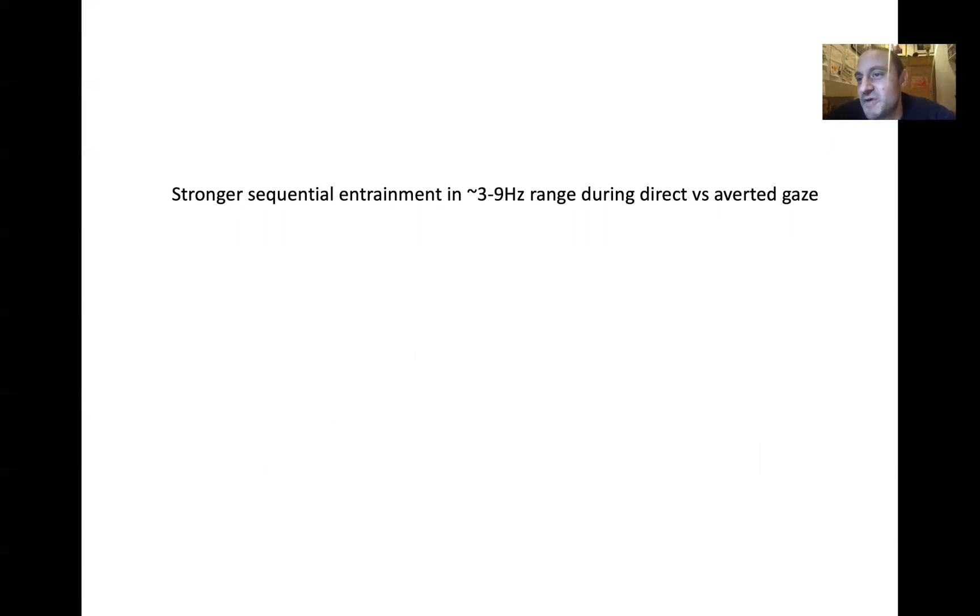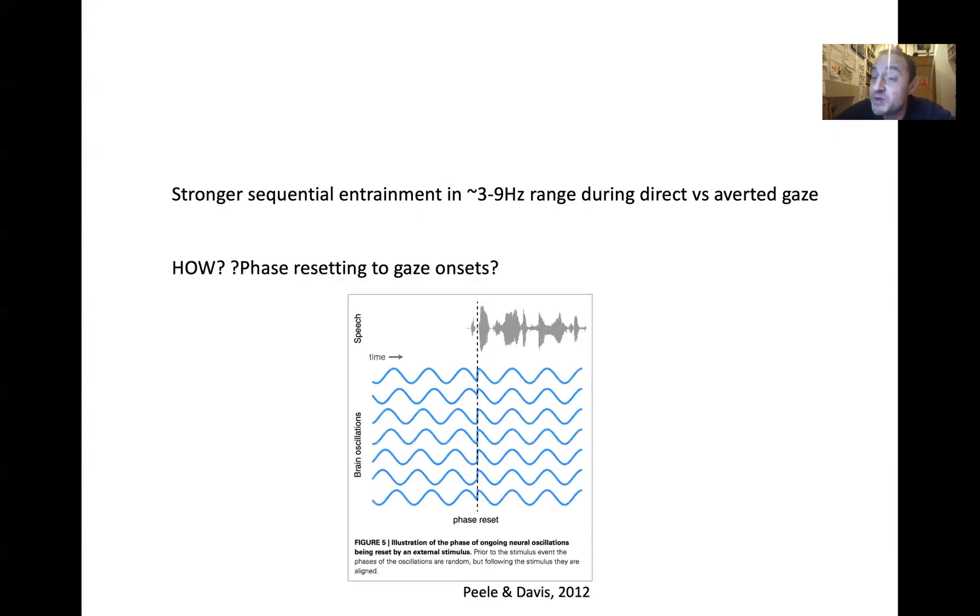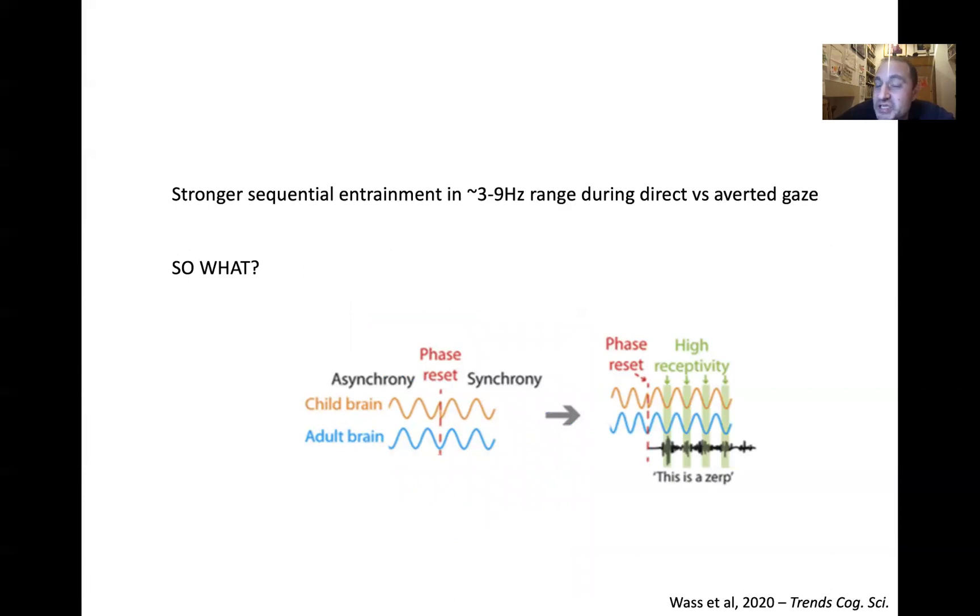We also found during live interaction that the babies who vocalized for longer during direct gaze had a stronger Granger cause influence on their adult brain activity. So possibly suggesting some role for infant vocalizations in driving these Granger causal influences. That's our finding of stronger sequential entrainment - Granger causal, one brain activity predicting another in the three to nine hertz range - and these are stronger during direct versus averted gaze. When I present this to audiences of neuroscientists, they say that's very interesting, it's a striking finding, but Sam, how does it happen? Because we're looking at oscillatory activity in the three to nine hertz range, which is quite a fine-grained time scale. How is it mechanistically possible for these two time series of brain activity to influence each other on such a fine-grained time scale?